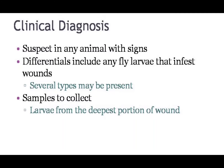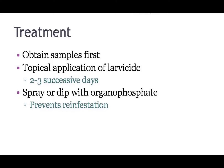Skewworm Myasis should be suspected when clinical signs are observed. Differential diagnosis includes any flies that are capable of infesting wounds. Several types of larvae may be present due to the likelihood of multiple infestations. Larvae should be collected from the deepest part of the wound, as facultative larvae may be present at the edges. Samples of larvae should be obtained from the animal before treatment is begun.